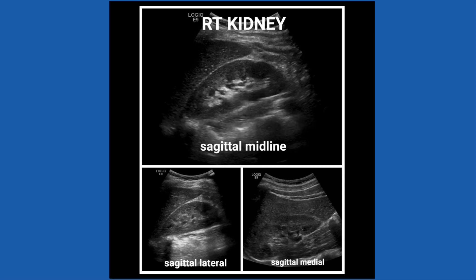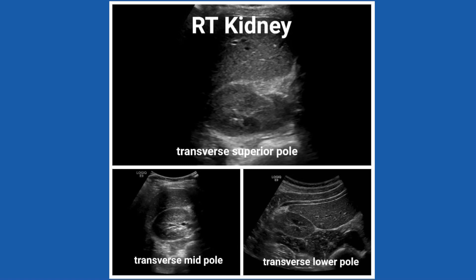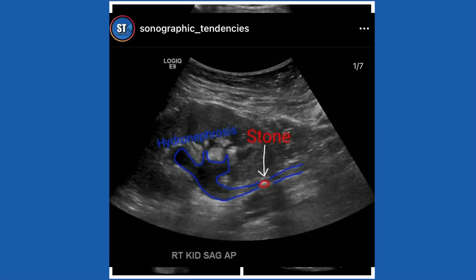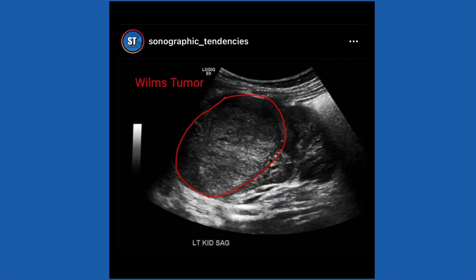Kidney size varies by age — the younger you are, the smaller your kidneys are going to be. There are charts that give you measurements by age range. Then move on to transverse: take images of the superior, mid, and inferior pole. If you're going to measure the kidney in transverse, measure it at the mid pole. If measuring height, you can do it in sagittal or transverse. As you're scanning the kidney, look for common things like nephrolithiasis, hydronephrosis — renal cysts are quite common. Also look for any tumors and check the renal echogenicity, which should be less than the liver.